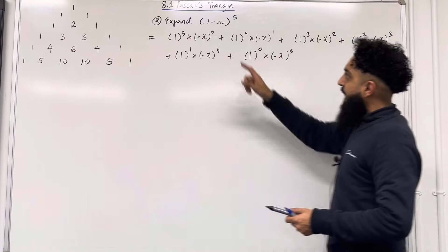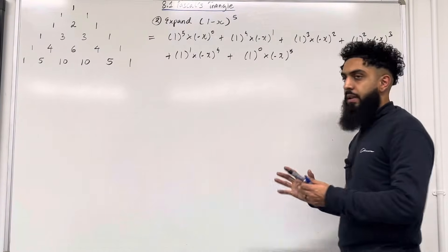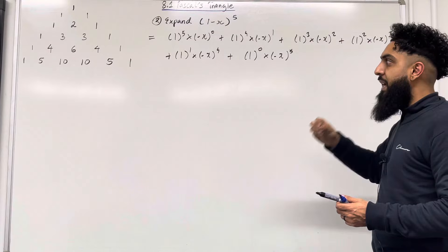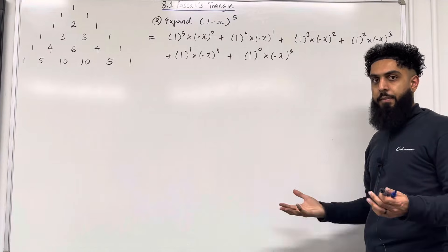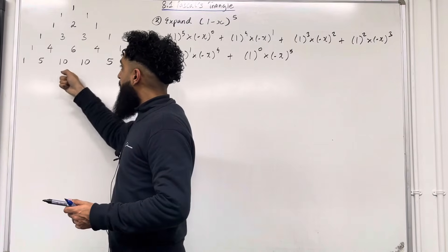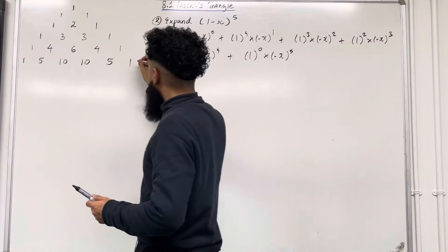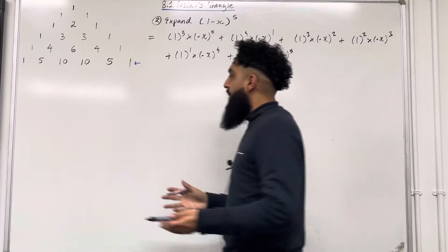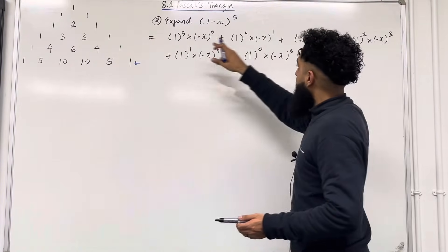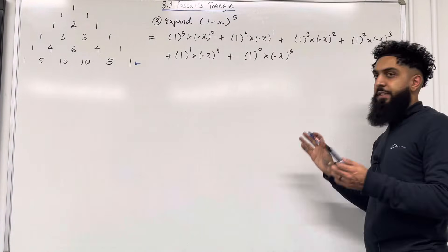Over here we have 6 different terms. So we go to Pascal's Triangle and identify the row with 6 terms — that row is this row over here: 1, 2, 3, 4, 5, 6 different terms. This is the row we're going to use to identify the coefficients of the 1st, 2nd, 3rd, 4th, 5th, and 6th terms respectively.